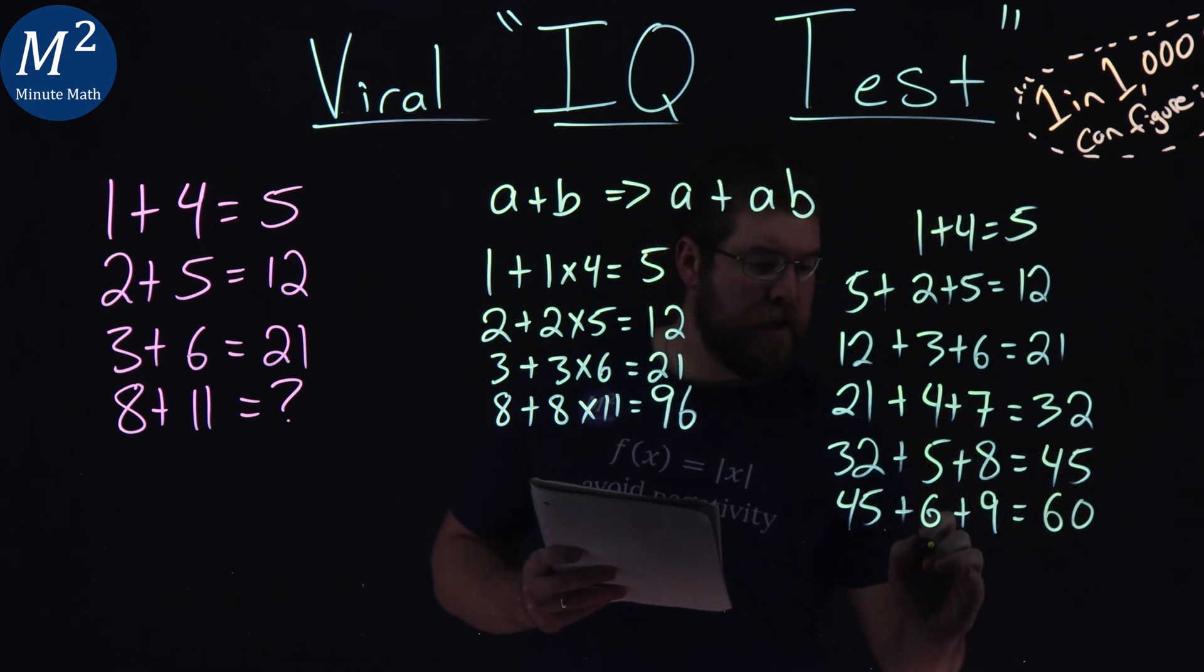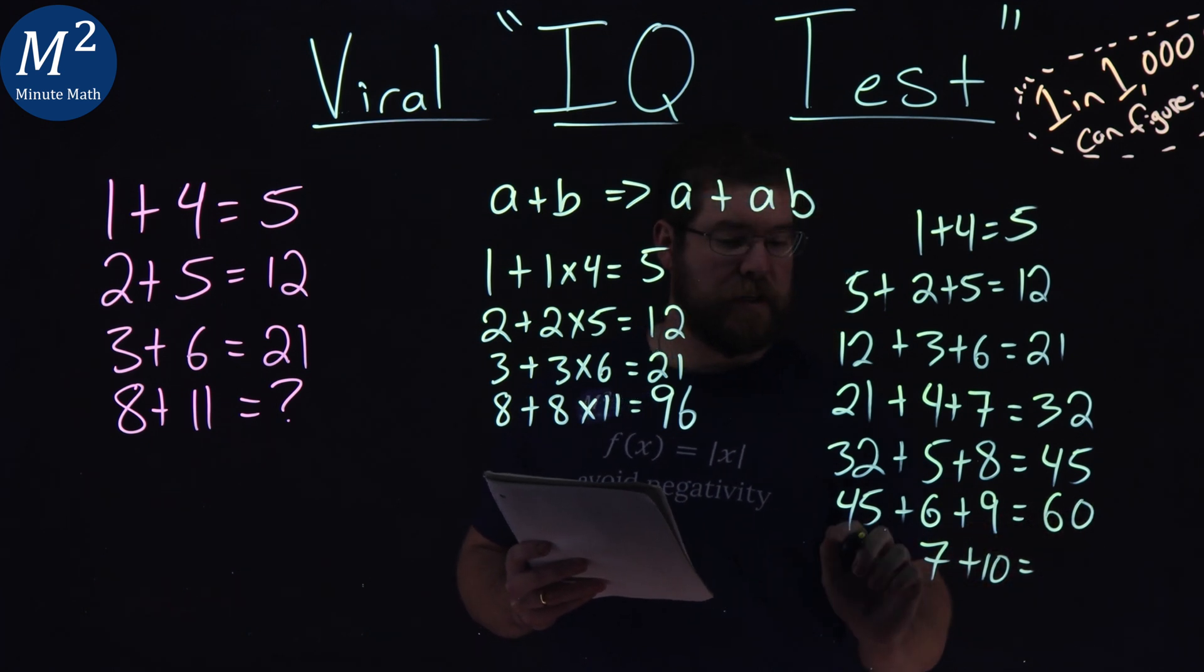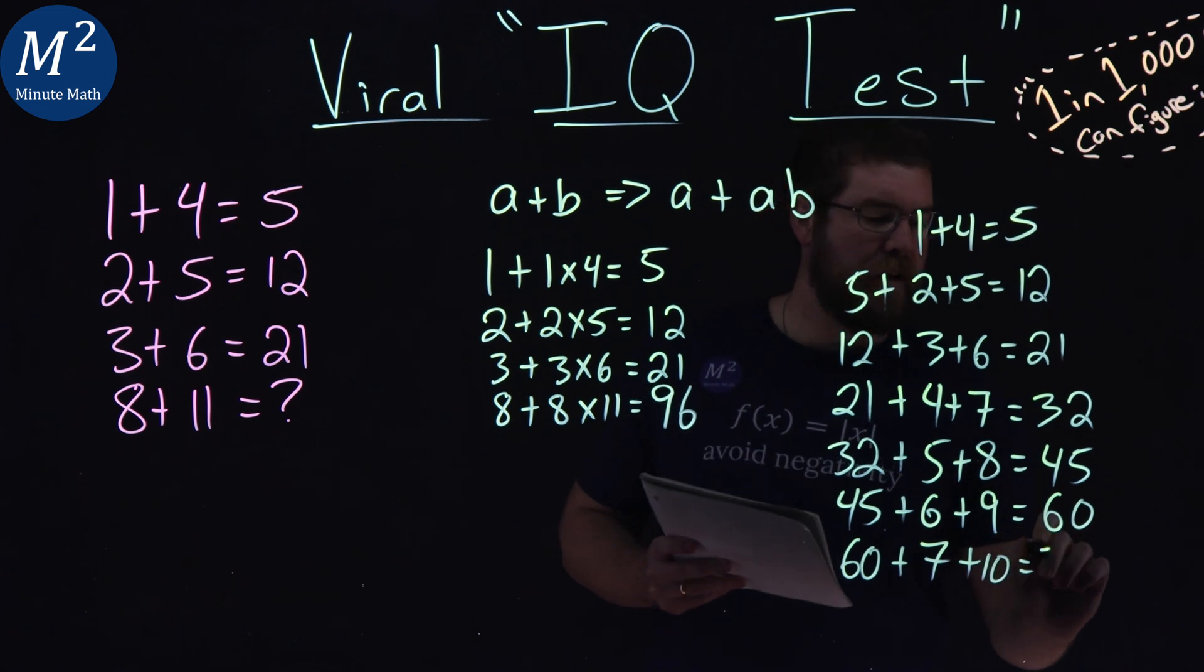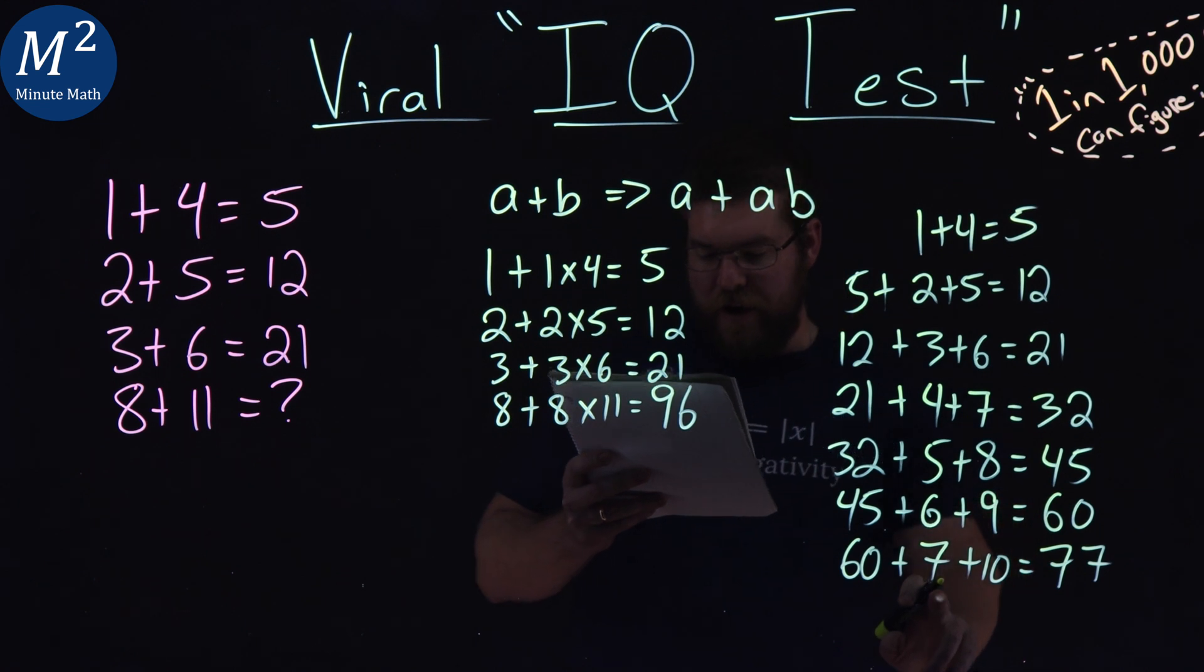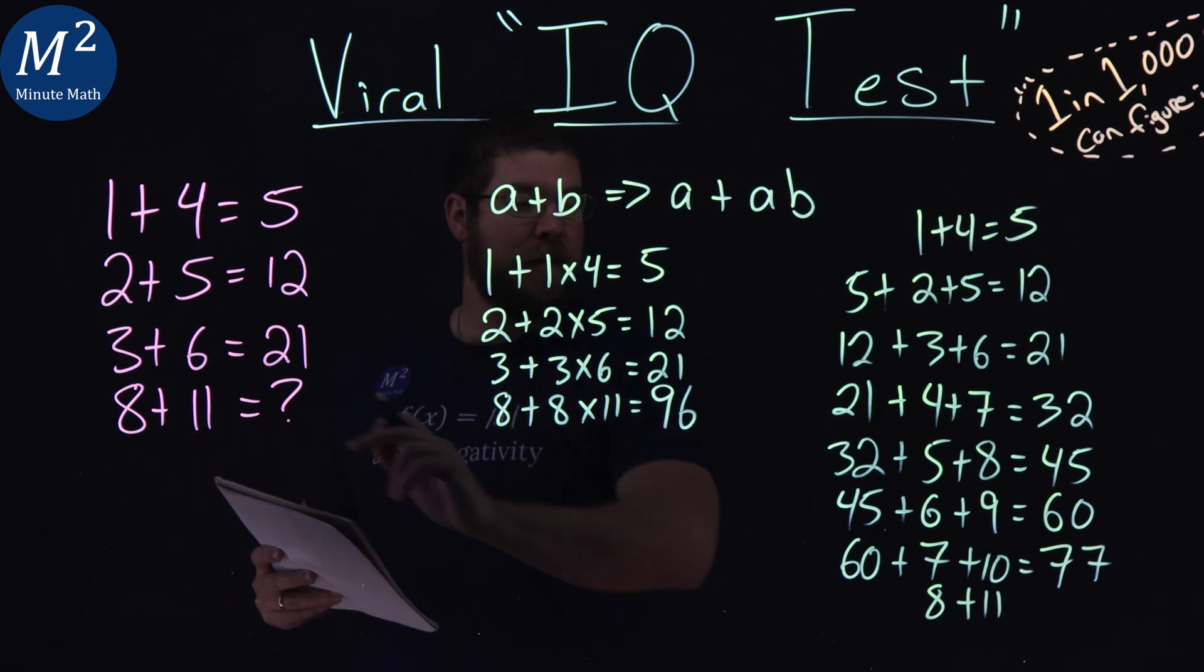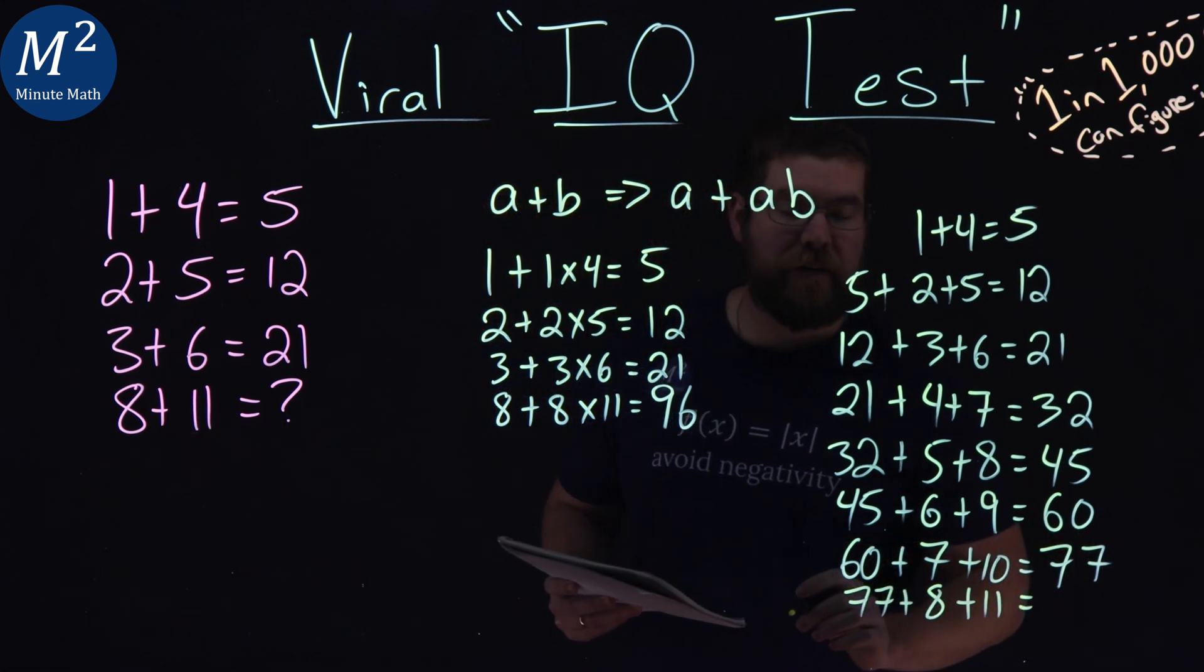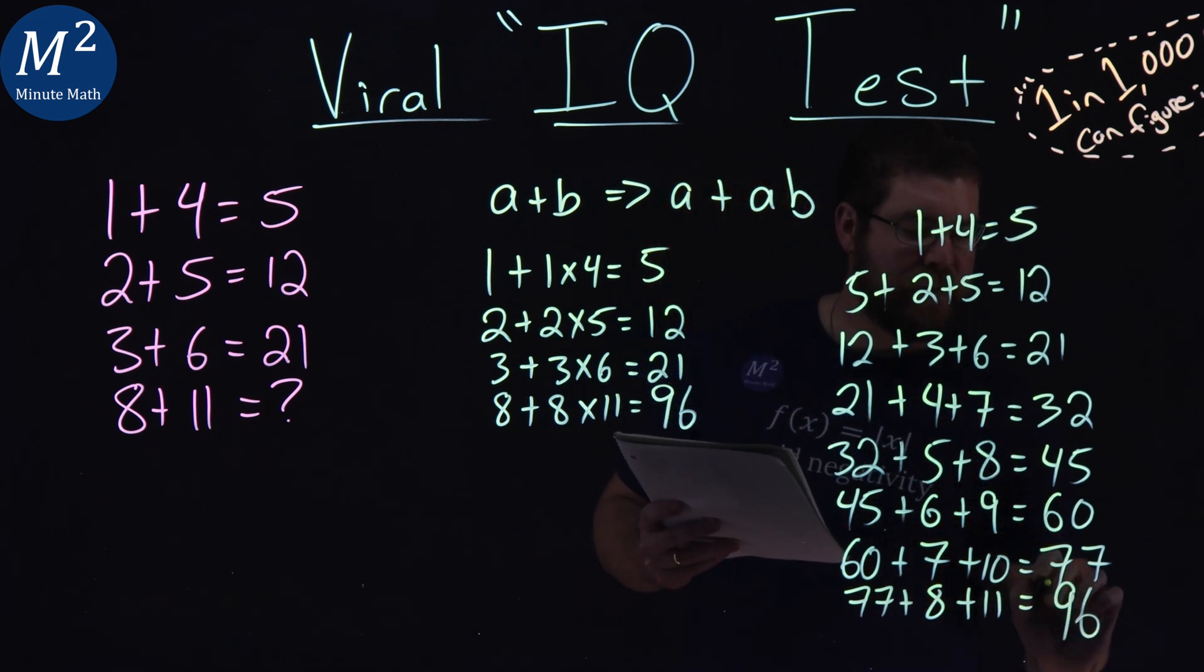Lastly, we come down. We have an 8 and 11, which they're asking here, right? 8 plus 11. By following our rules, 77 comes out front. 77 plus 8 plus 11 is 96.